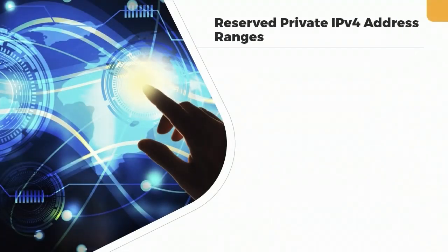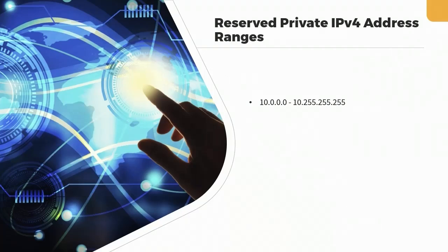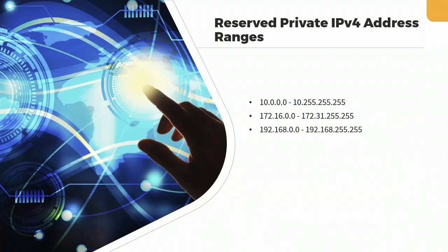With IPv4, there are reserved IP address ranges, meaning routing equipment will not route packets within these ranges. There's the 10.0.0.0 through 10.255.255.255 range, then 172.16.0.0 through 172.31.255.255, and finally, the commonly used 192.168.0.0 through 192.168.255.255 range, widely used with home network equipment. Any addresses within those ranges do not get routed over the internet.